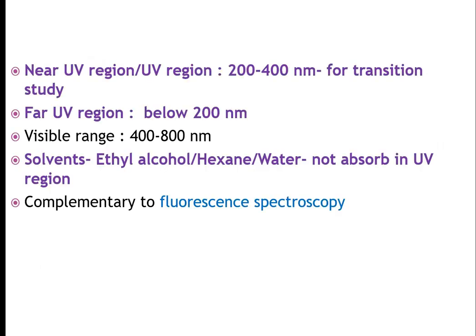In UV visible spectroscopy, the near UV region is 200 to 400 nanometers, mainly used for electronic transitions in molecules. The far UV region is below 200 nanometers, which is vacuum. The visible range is between 400 to 800 nanometers, which we can see with our naked eye. Common solvents used include ethyl alcohol, hexane, and water, which do not absorb light in the UV region.